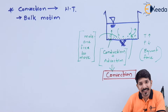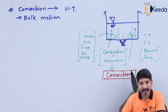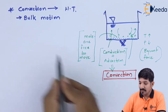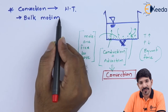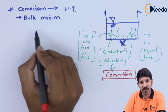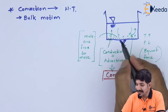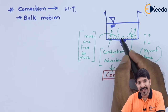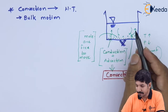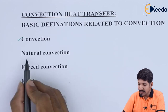As we have seen in thermodynamics, there are two approaches to study any given phenomenon: the macroscopic approach and the microscopic approach. With the macroscopic approach, convection is simply heat transfer due to bulk motion of the fluid particles. At the microscopic level, since molecules are free to move, they carry heat and move in the direction of lower temperature.